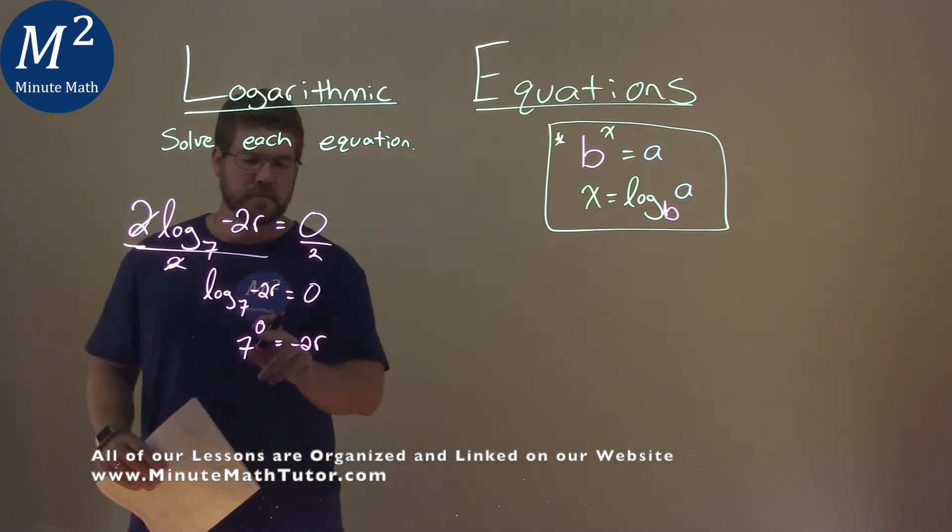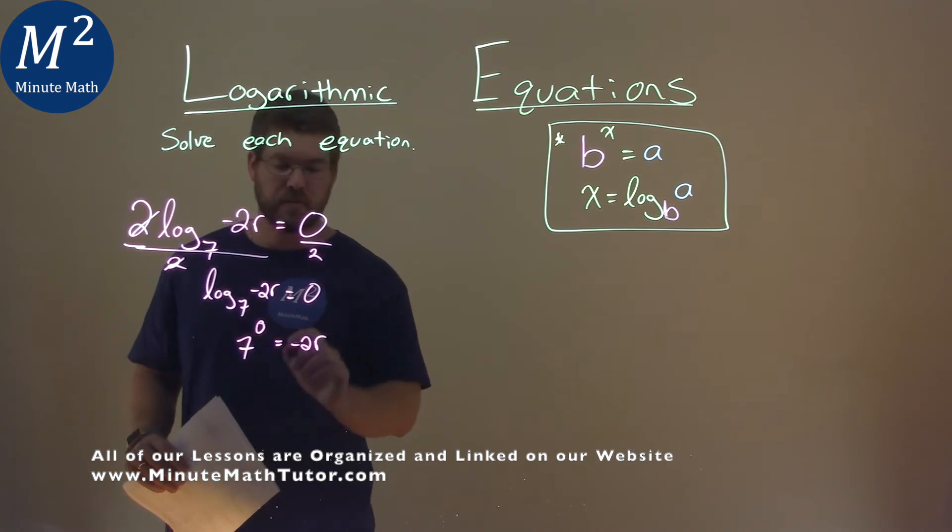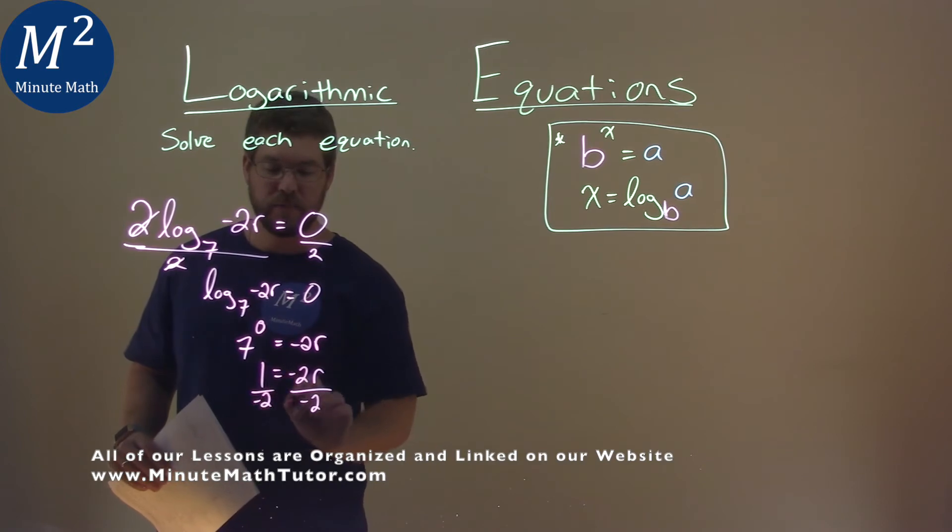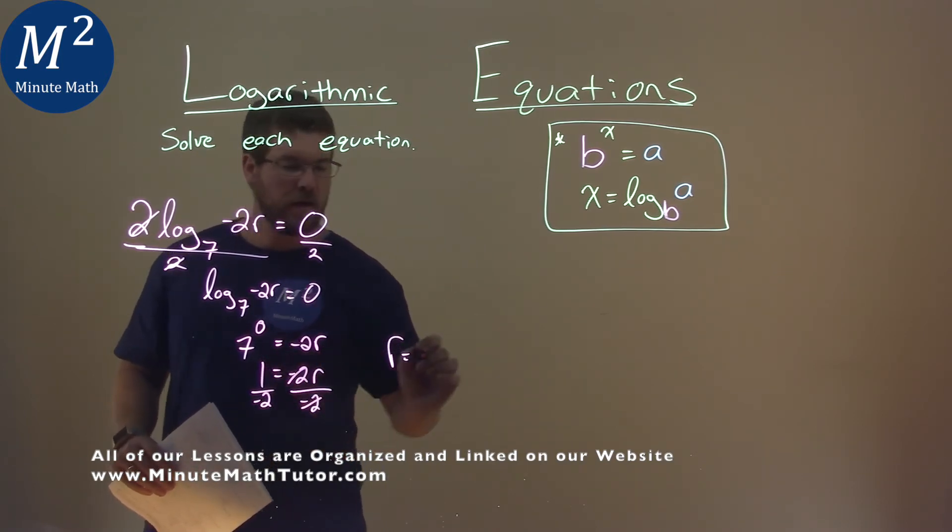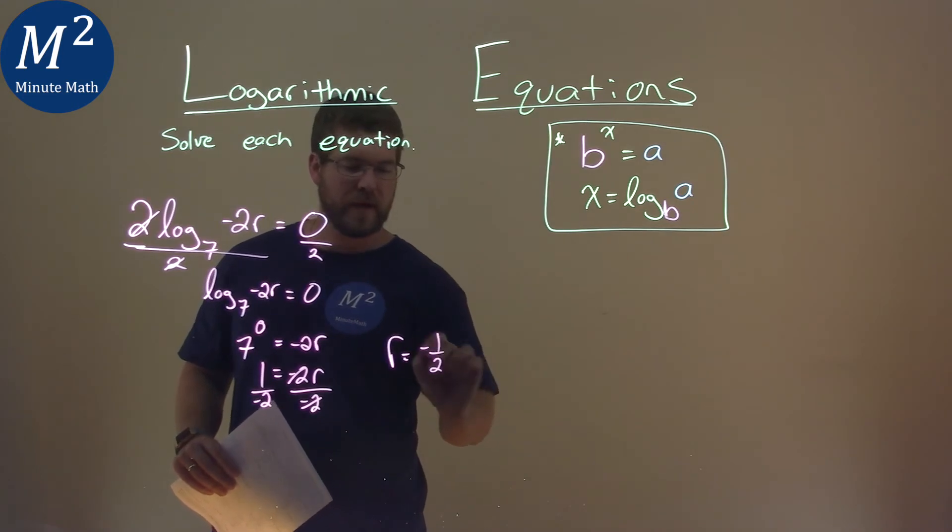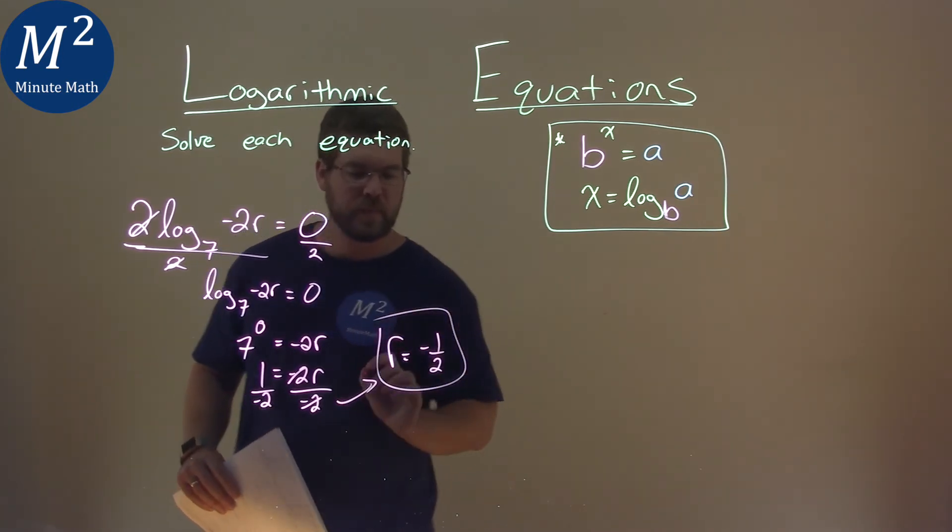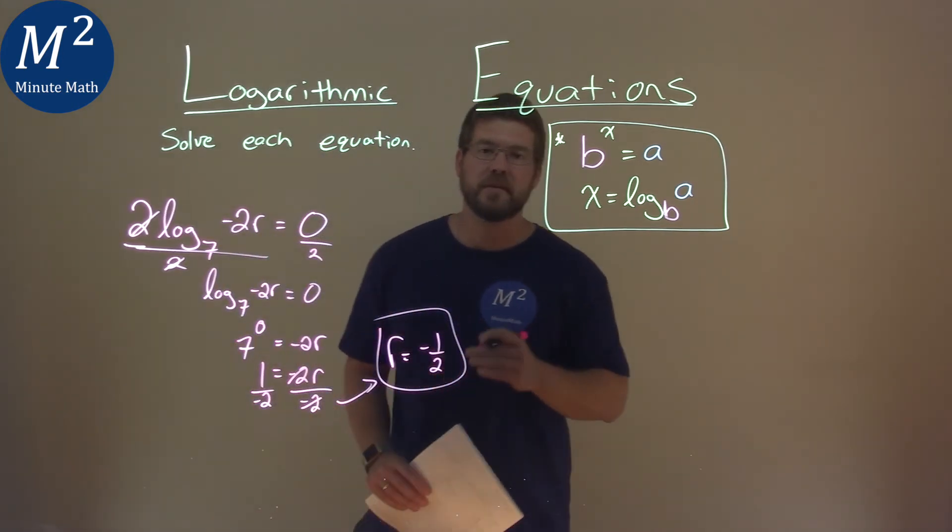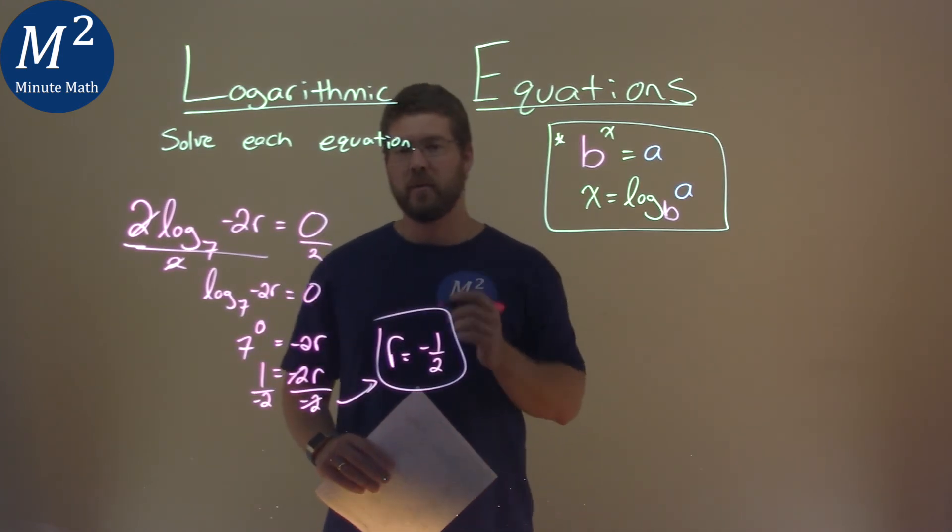From there, 7 to the 0 power is just a 1, equals negative 2r. Divide both sides by negative 2, and I put r here, cancels out, r equals negative 1 half. And so our final answer here is r equals negative 1 half.